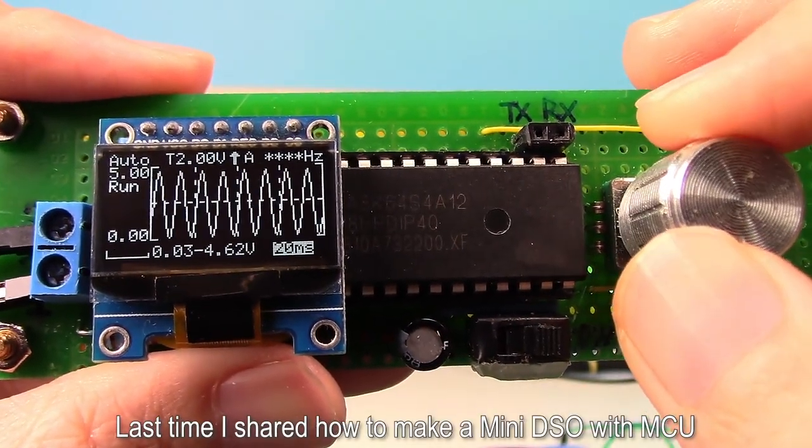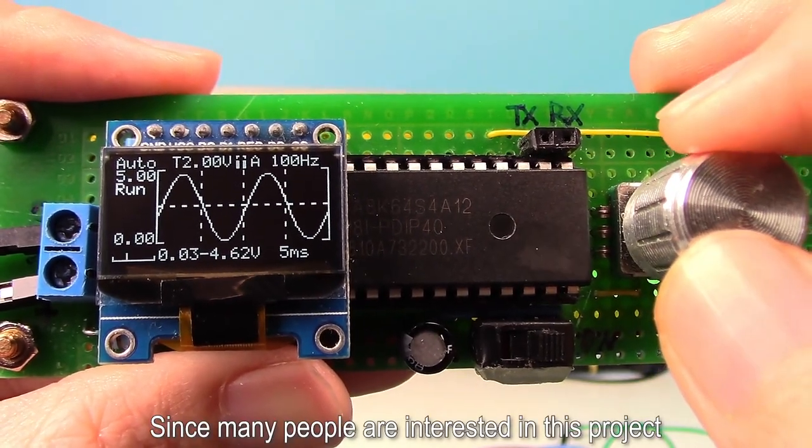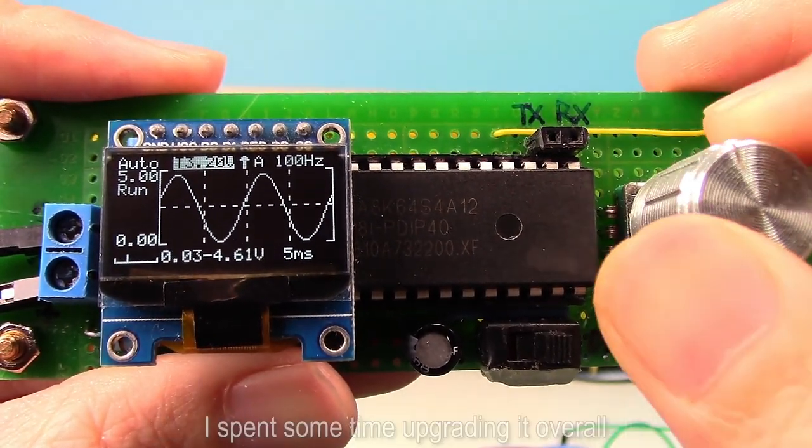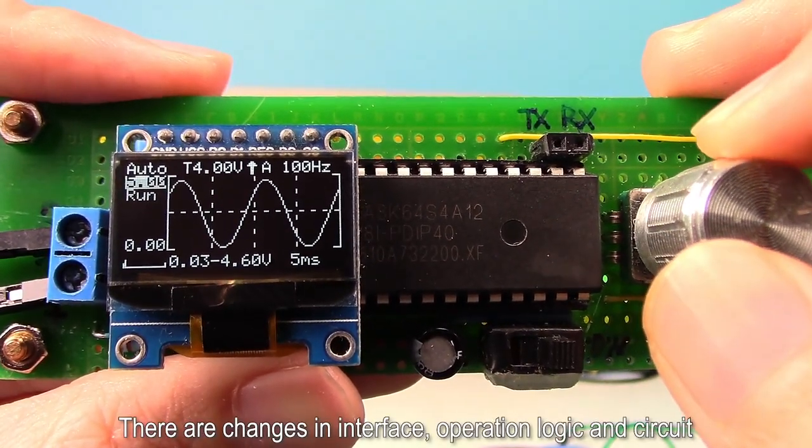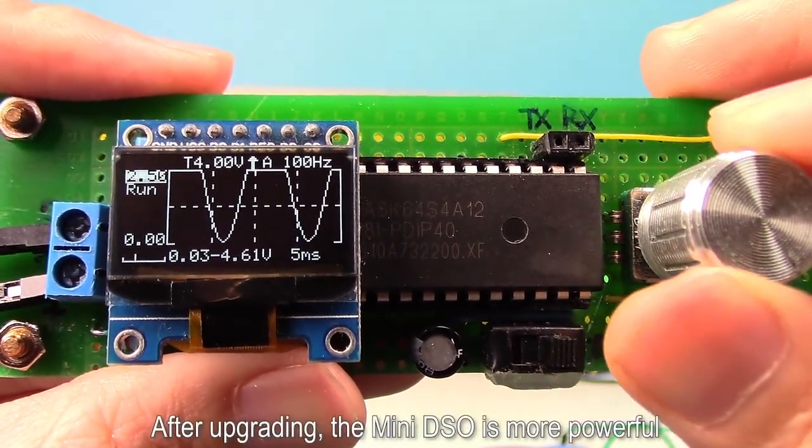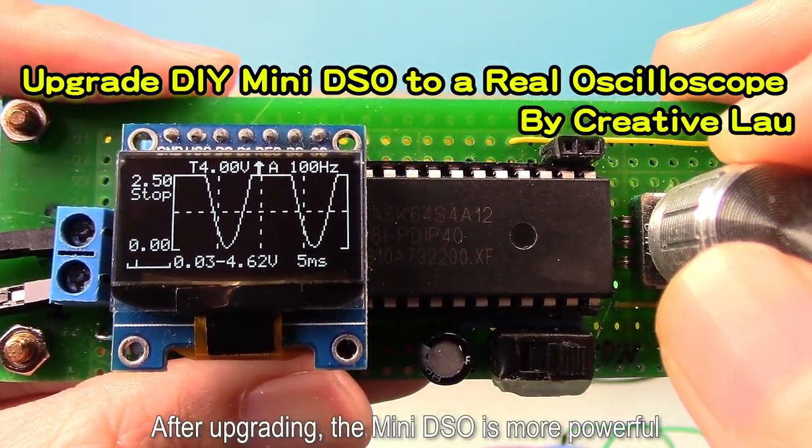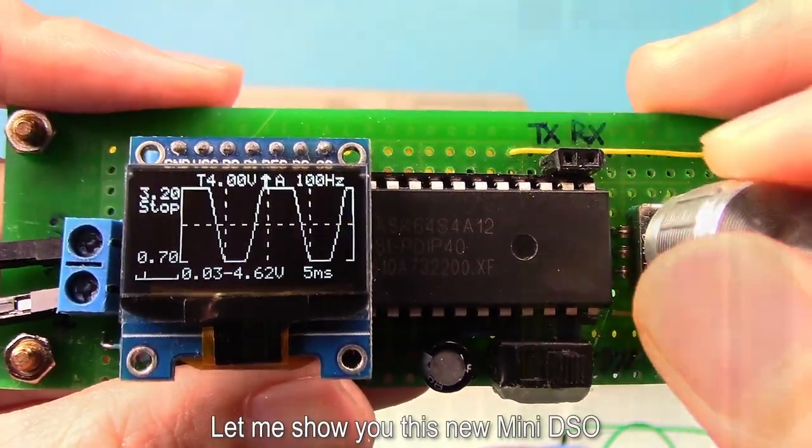Last time I shared how to make a mini DSO with MCU. Since many people are interested in this project, I spent some time upgrading it overall. There are changes in interface, operation logic, and circuit. After upgrading, the mini DSO is more powerful. Let me show you this new mini DSO.